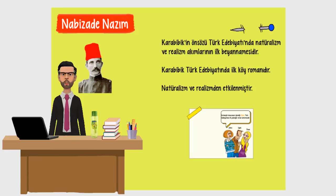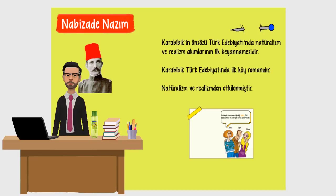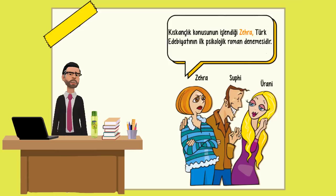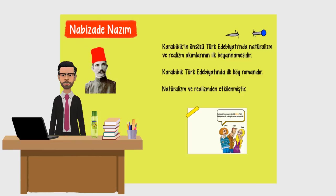Şimdi ise Nabizade Nazım'a bakıyoruz. Karabibik'in ön sözü, Türk Edebiyatında naturalizm ve realizm akımlarının ilk beyannamesidir. Karabibik, Türk Edebiyatında ilk köy romanıdır. Naturalizm ve realizmden etkilenmiştir. Kıskançlık konusunun işlendiği Zehra, Türk Edebiyatında ilk psikolojik roman denemesidir.